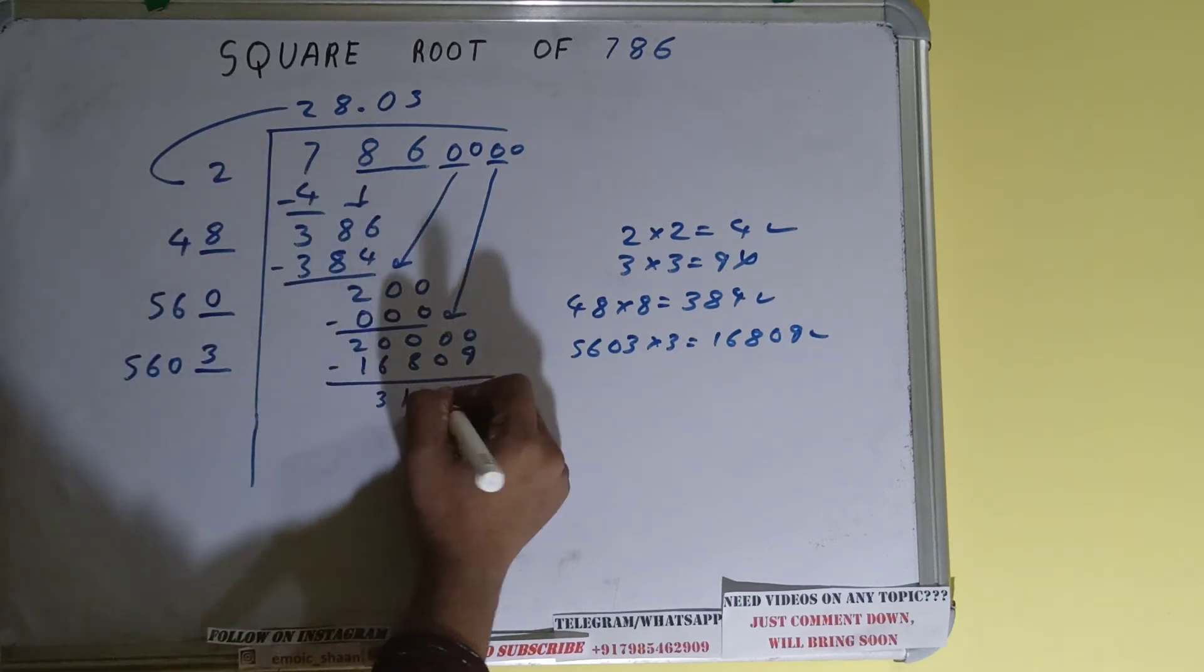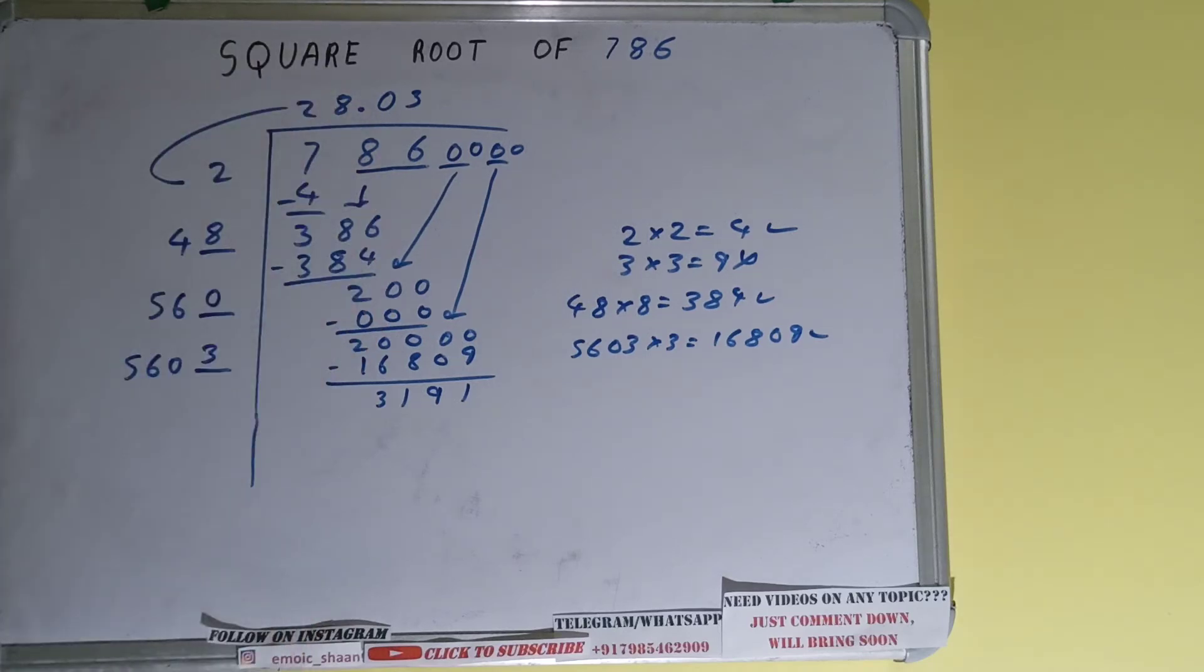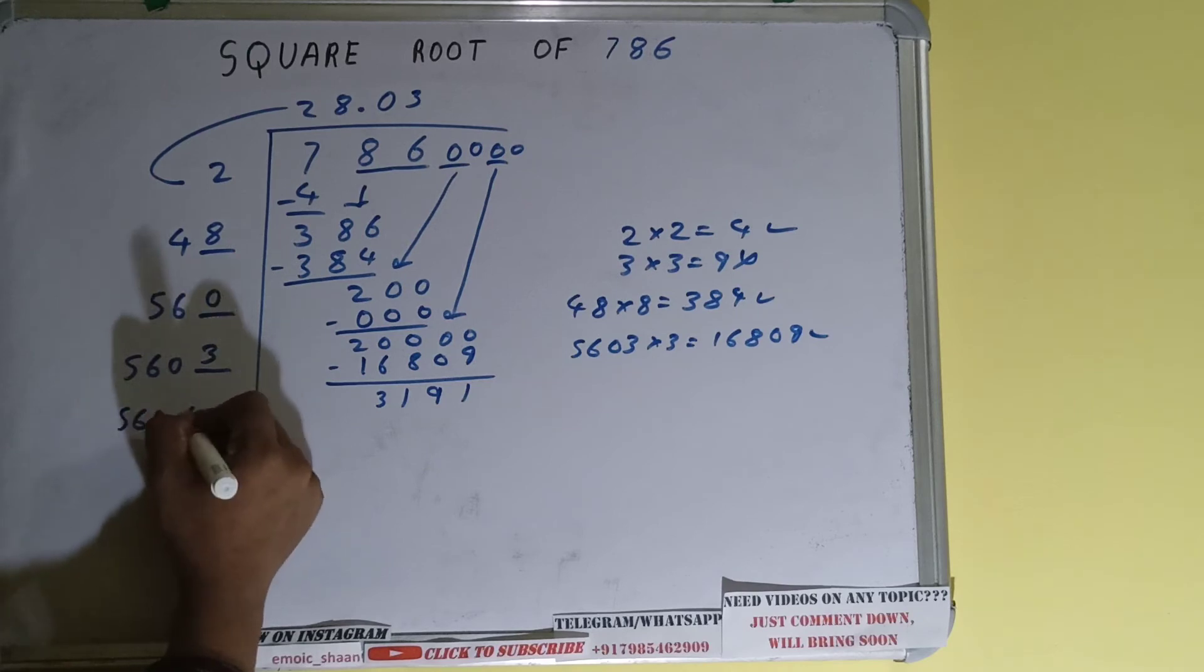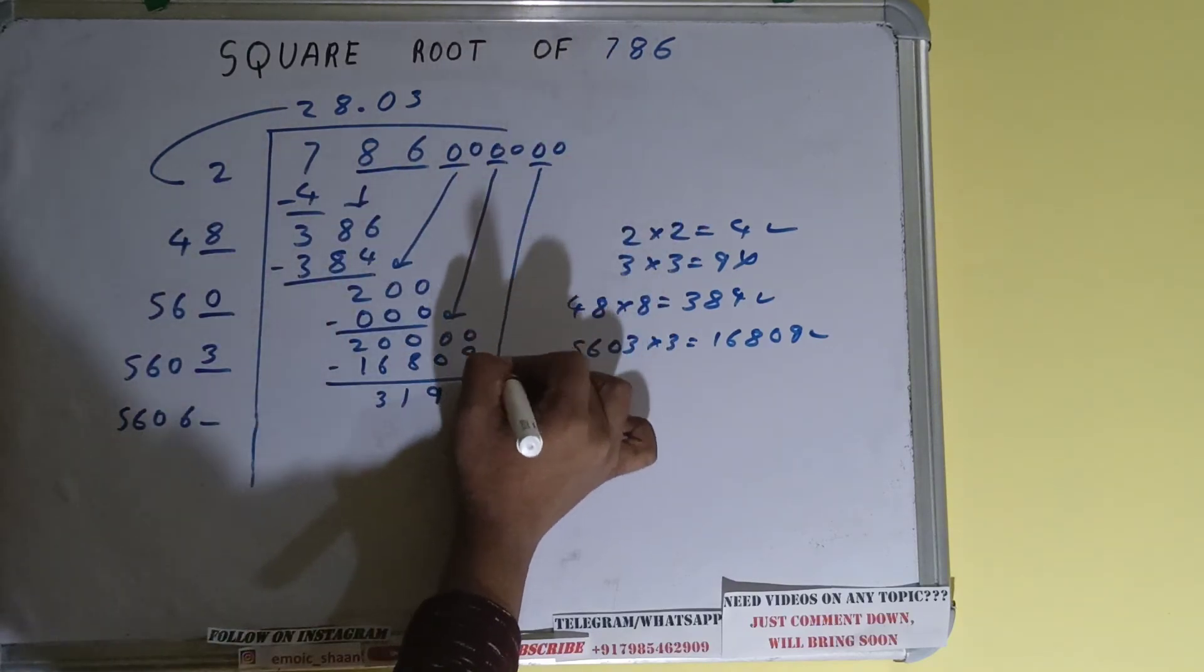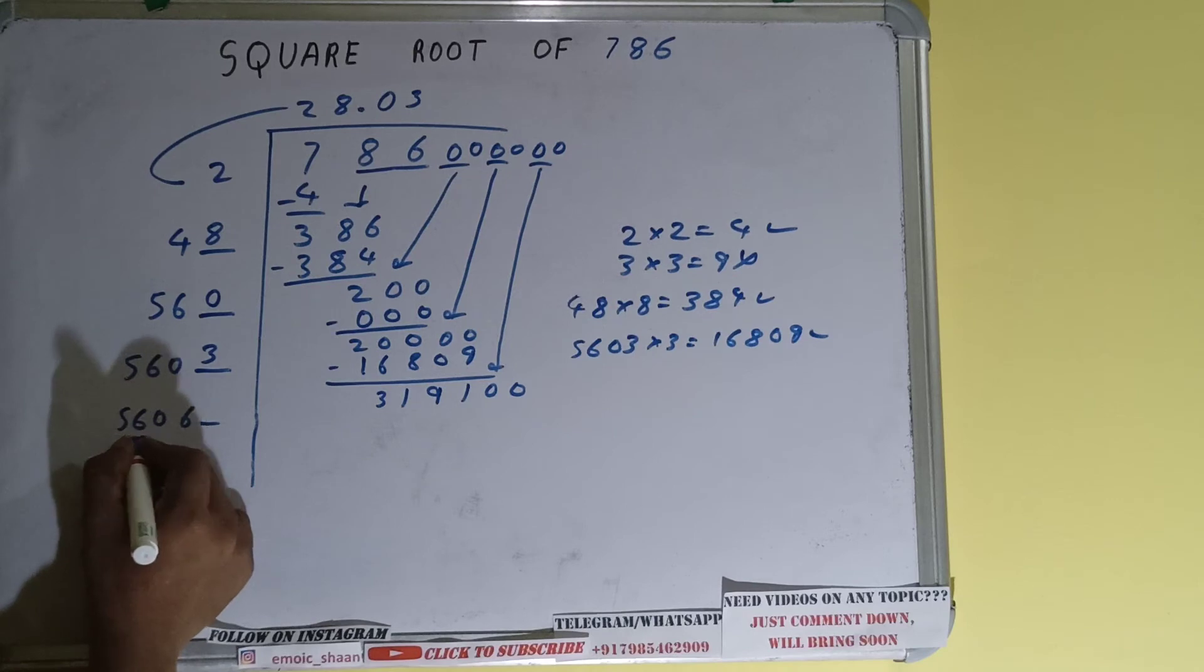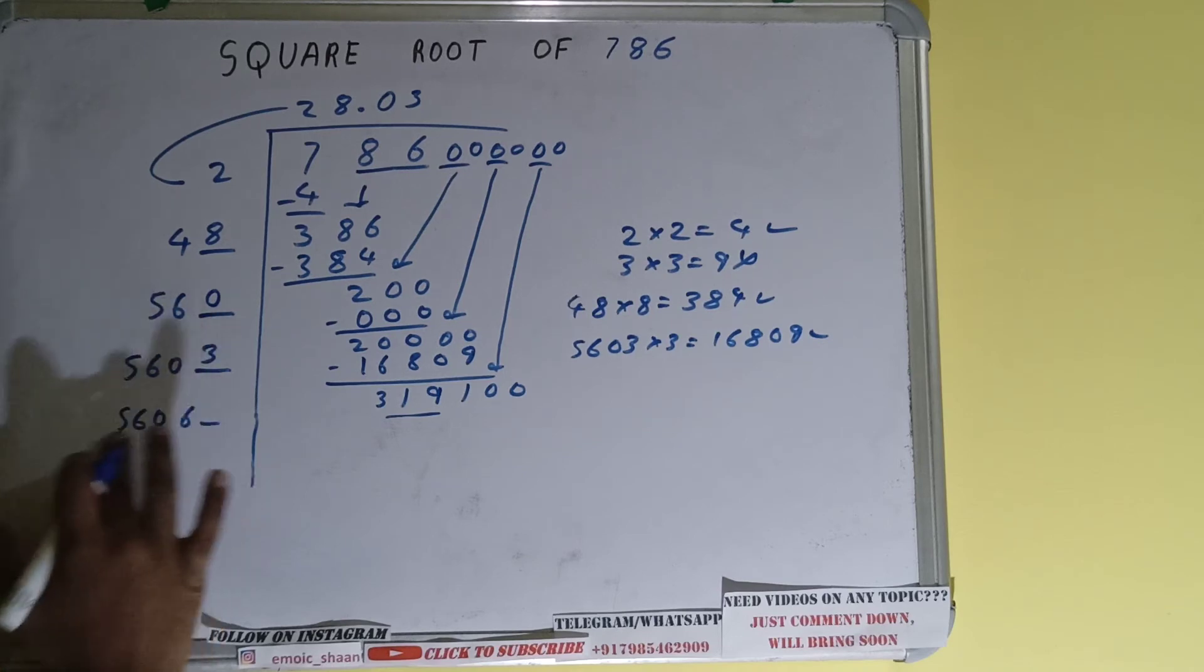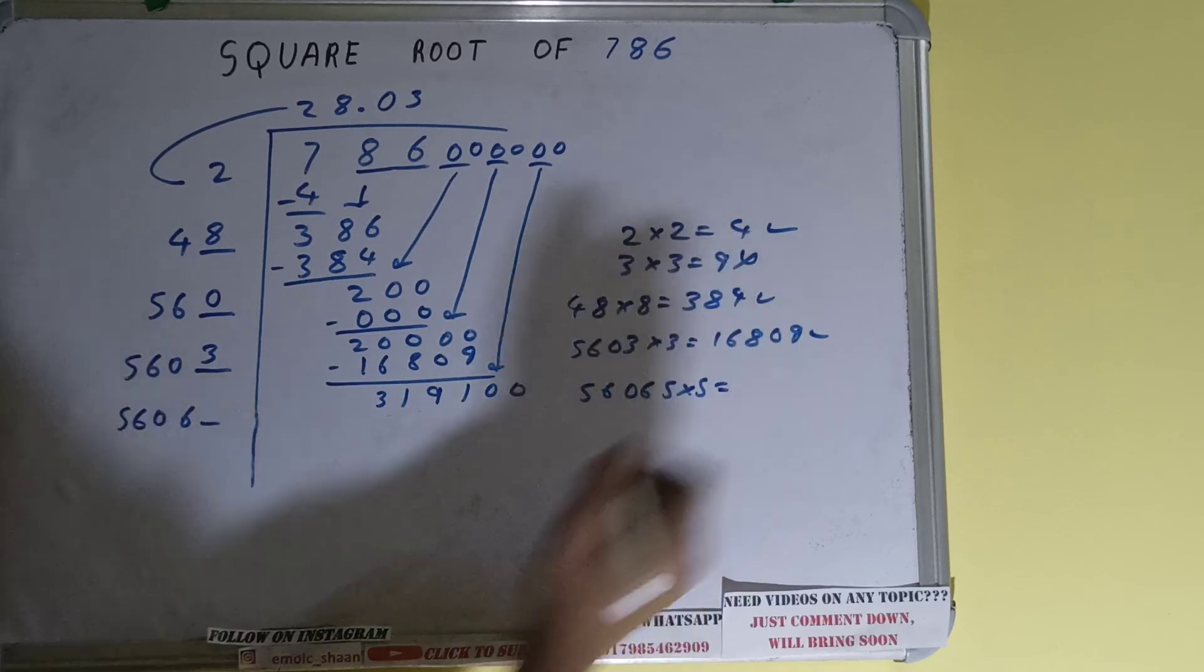And it will be 3191. Now 5603 into 3 we did so add both. So 5603 plus 3 will be 5606 and 1 digit extra. And this number we need to make it big so bring the next pair down and it will become as 319,100. Now we can compare this 56 with this 319. So 56 6 times is 336, so we cannot try 6 times, we have to try 5 times. So 56065 into 5 we can try.